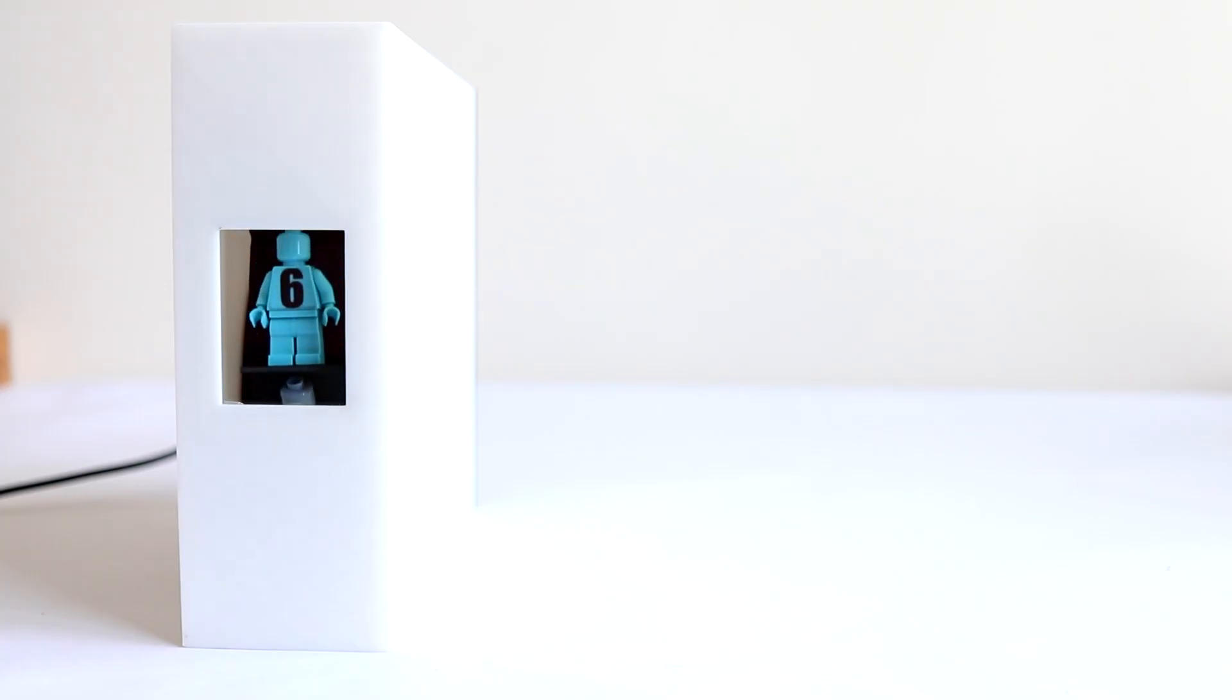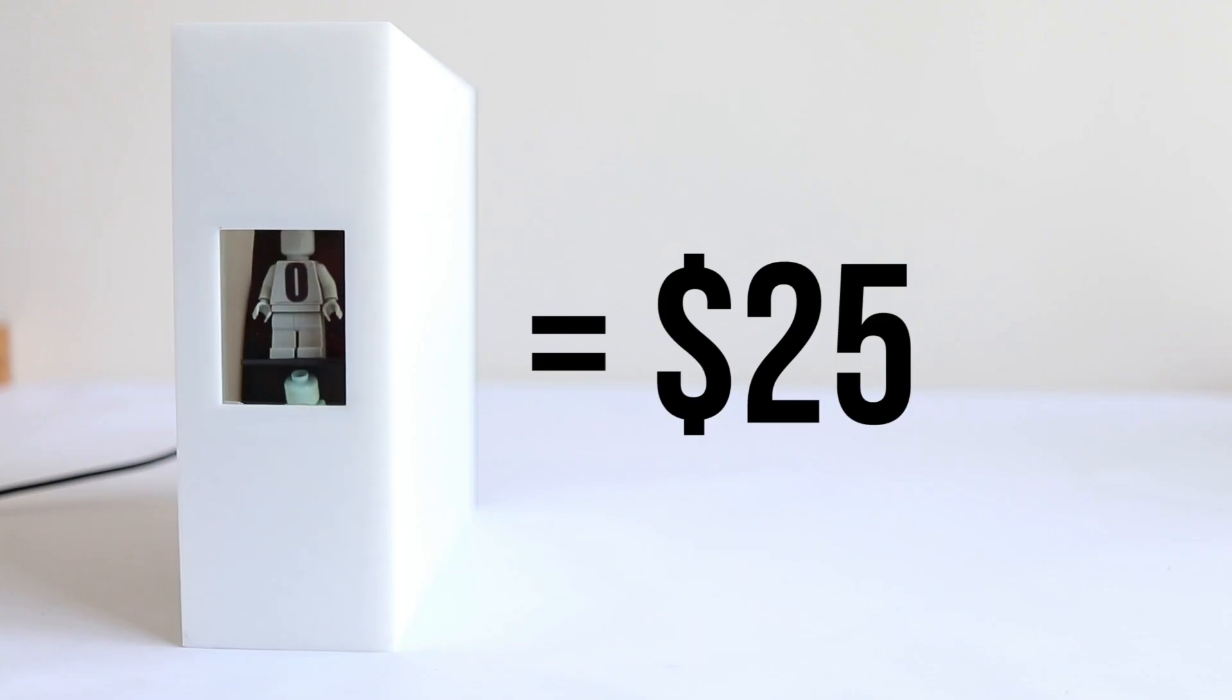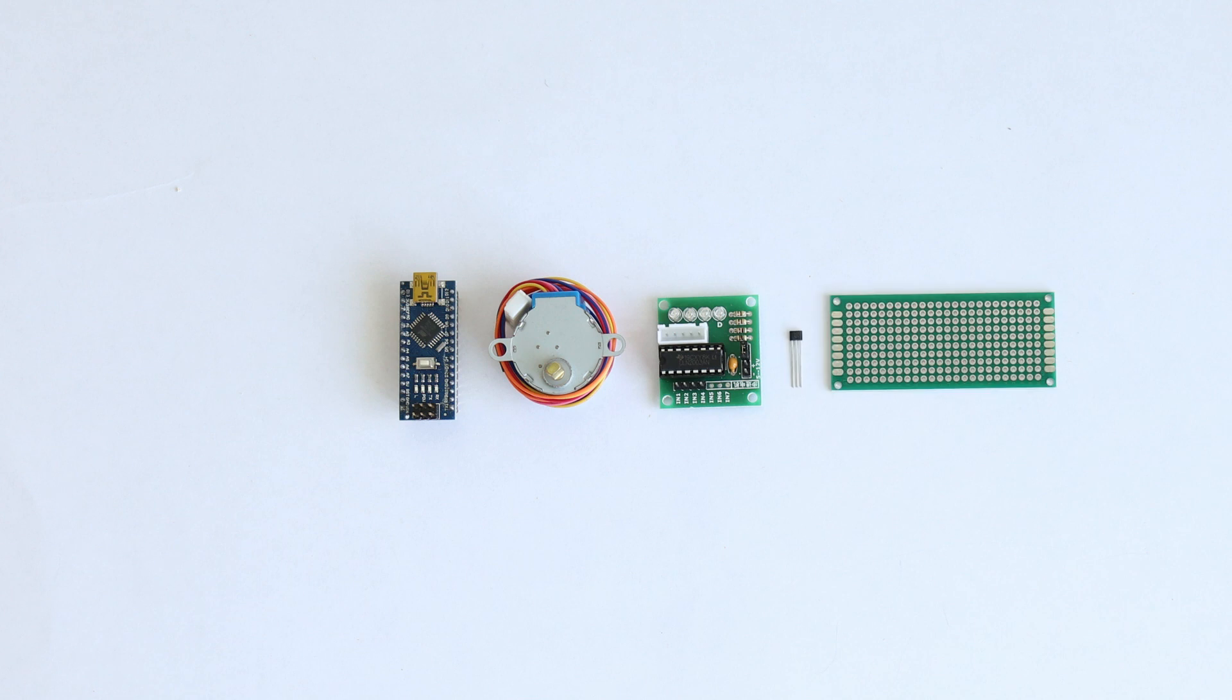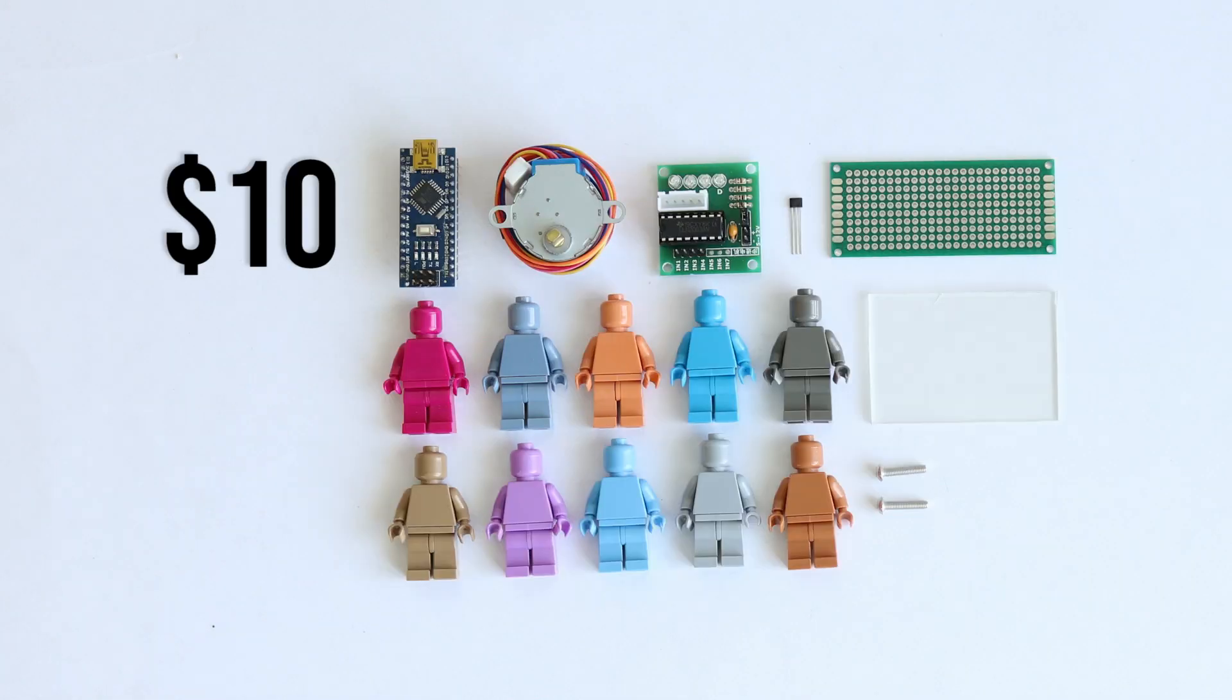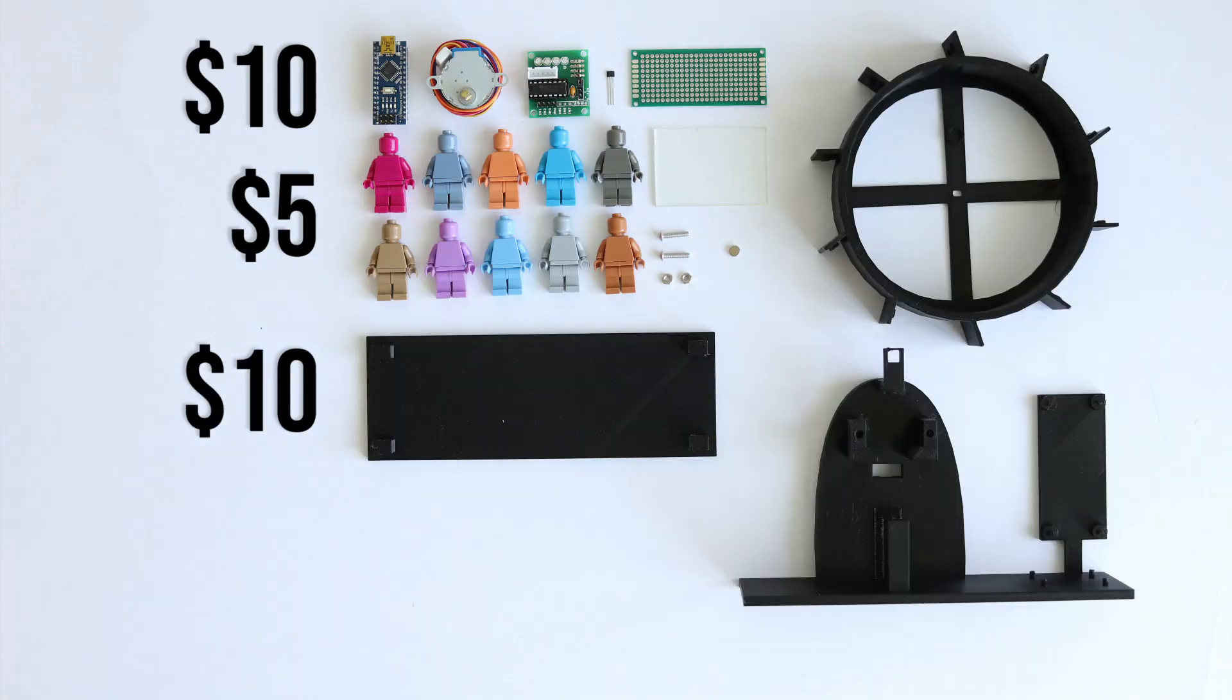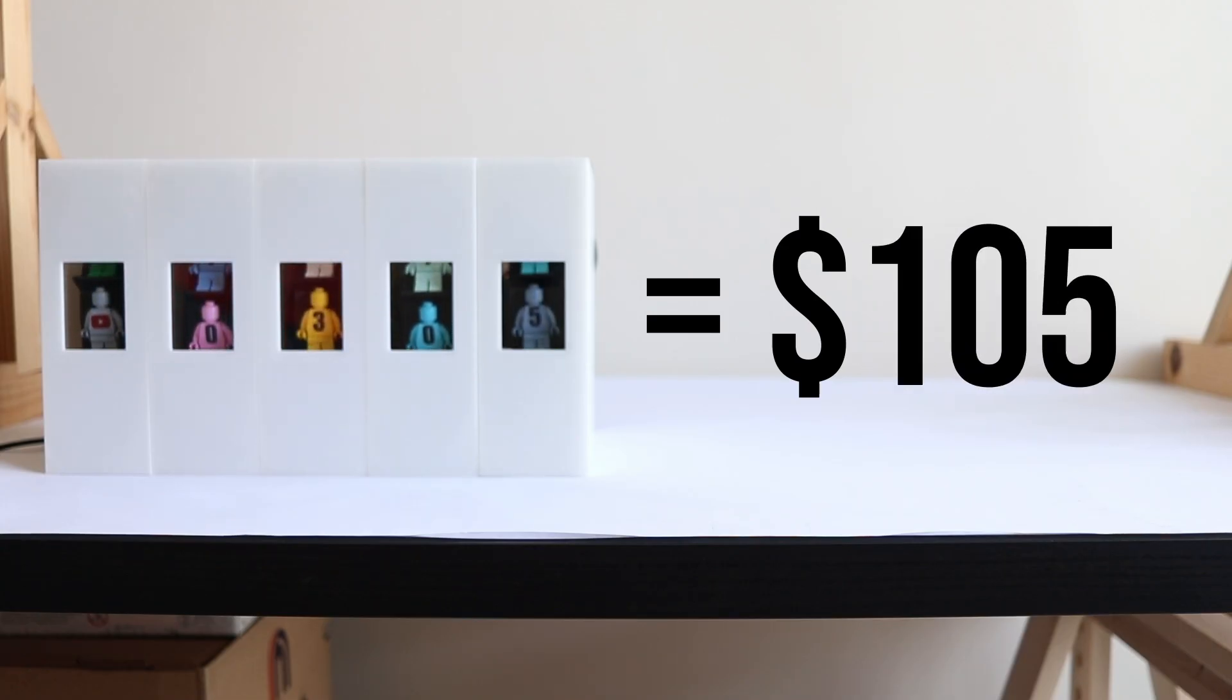I tried to keep the cost low and use easy to get parts, but it still ended up kind of expensive. Each wheel costs approximately $25, and that breaks down into around $10 for the electronic parts, around $5 for the knock-off minifigures, and $10 for the filament to print the parts. So five digits is in total around $125.